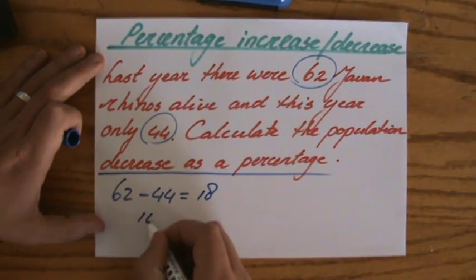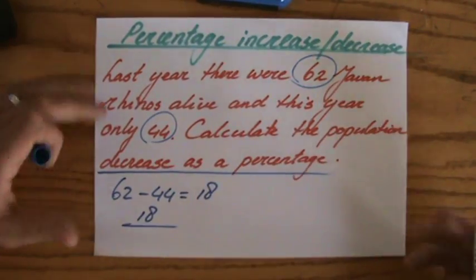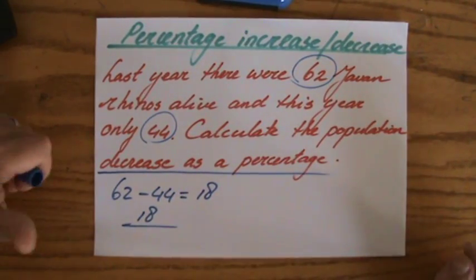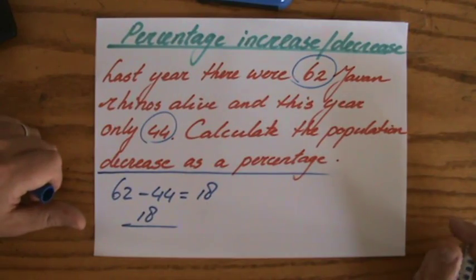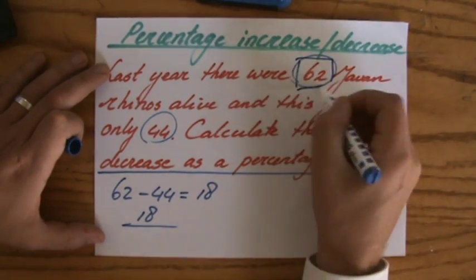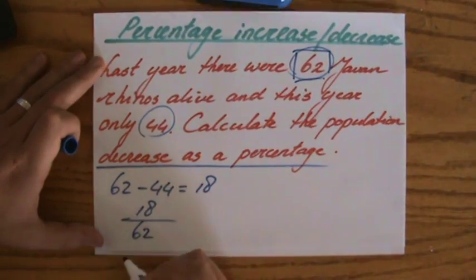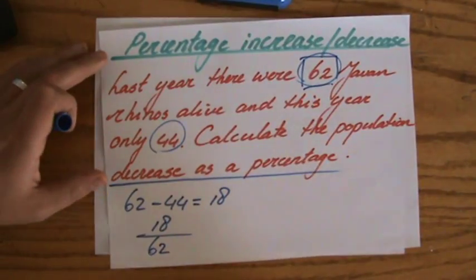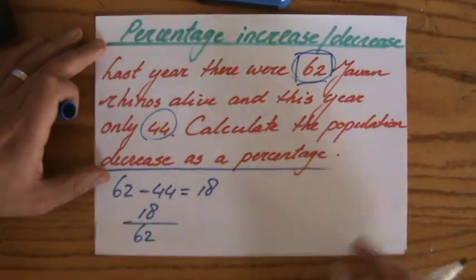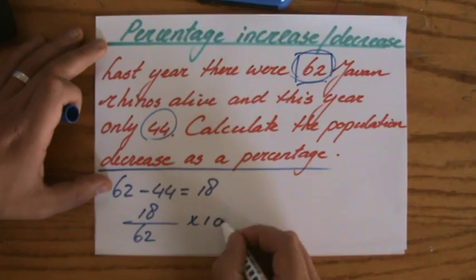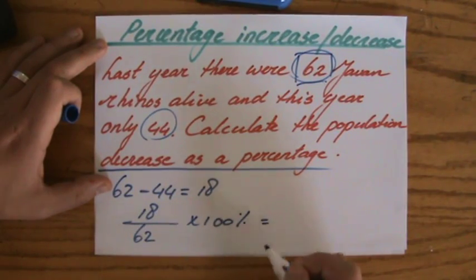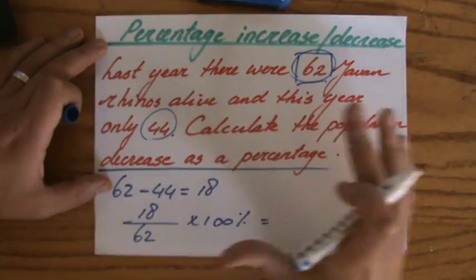And to find that percentage decrease, I do 18 over, now what was the original value? How many of those rhinos were originally still alive? That is indeed 62. Now that is a fraction. We do not want a fraction, we want a percentage. Times by 100 percent. And then you're going to get a whole battery of decimals, I believe.